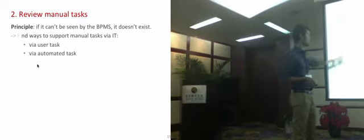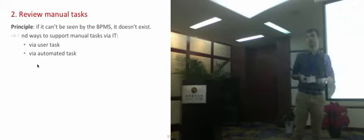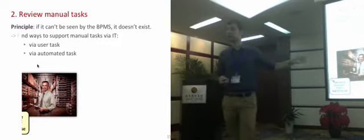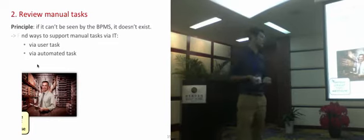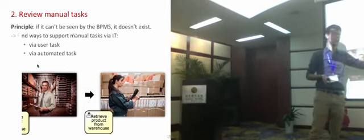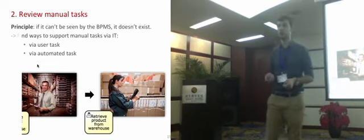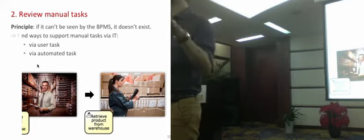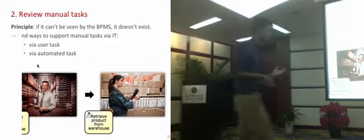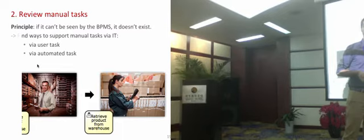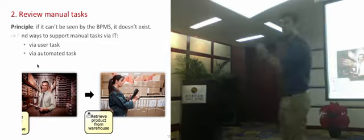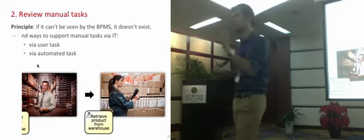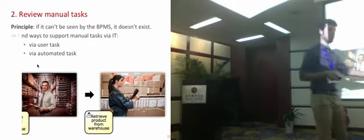There are two options: we can turn a manual task into a user task, or turn it into an automated task. For retrieve product from warehouse, one option is to have the warehouse worker receive a notification through a user form, go manually pick the package from the shelf, and once done, insert the information into the user form and submit. Note that the task hasn't changed — the manual work is still performed — but the idea is to synchronize this manual task with the BPMS by means of a user form.